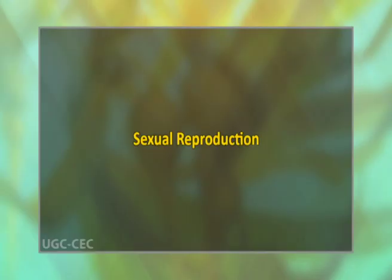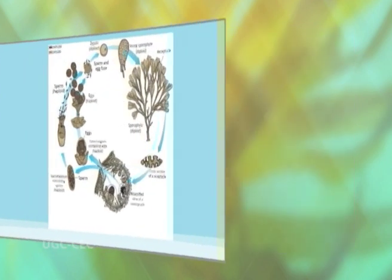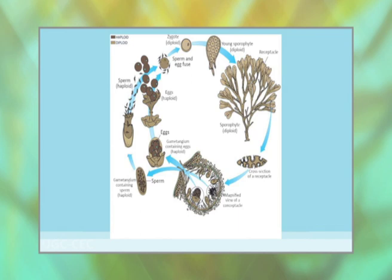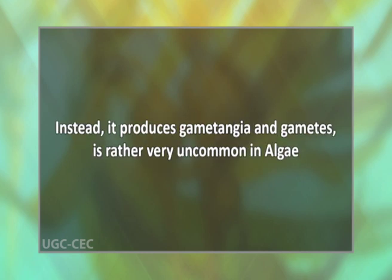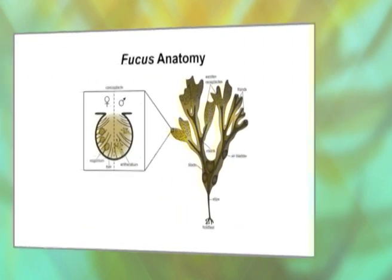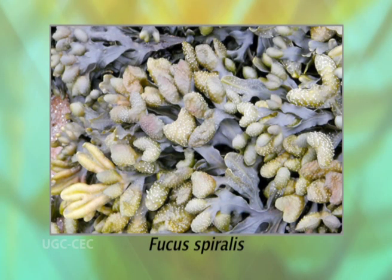Now, sexual reproduction. Fucus has a highly developed oogamous type of sexual reproduction and exhibits a unique feature in its life cycle pattern — a diplontic pattern of life cycle. Fucus possesses a remarkably elaborate diploid phase which does not produce any sporangia or spores; instead, it produces gametangia and gametes, which is rather very uncommon in algae. The gametes are born in oogonia and antheridia, which are produced in the conceptacles. Some species contain both oogonia and antheridia in a single conceptacle, for example Fucus spiralis.